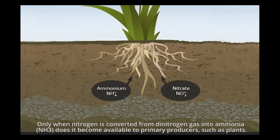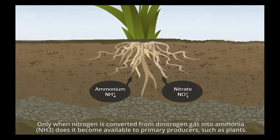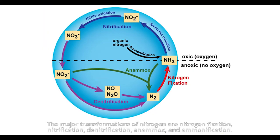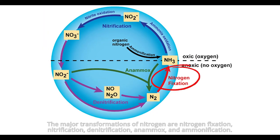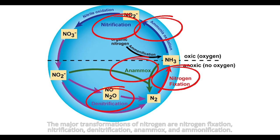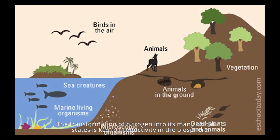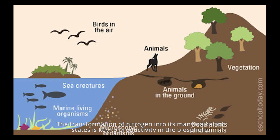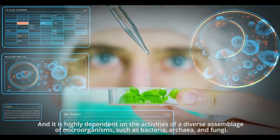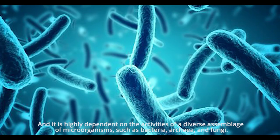Only when nitrogen is converted from dinitrogen gas into ammonia, NH3, does it become available to primary producers, such as plants. The major transformations of nitrogen are nitrogen fixation, nitrification, denitrification, anammox, and ammonification. The transformation of nitrogen into its many oxidation states is key to productivity in the biosphere, and it is highly dependent on the activities of a diverse assemblage of microorganisms, such as bacteria, archaea, and fungi.